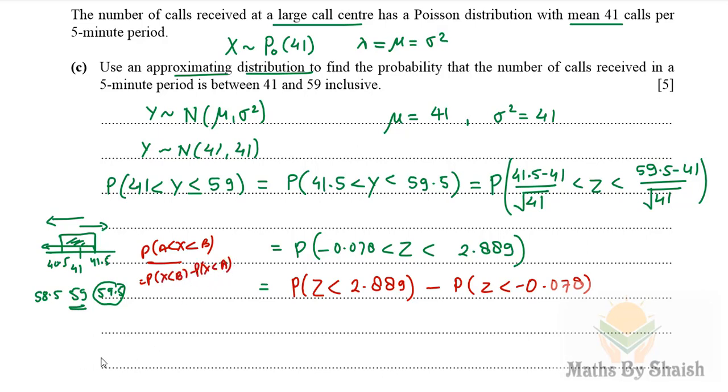Now we can see the graph. We are finding, let's say, Z is less than 2.889. This value is lying somewhere here, left side of the mean, because it's negative. We are getting this value and this value is corresponding to positive one. So it is going to be one minus phi of this value, so we can write it as one minus phi of the positive value of this, 0.078.